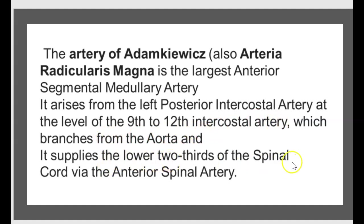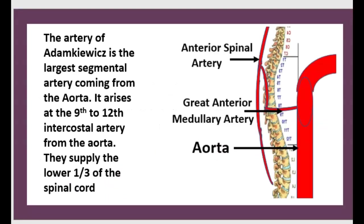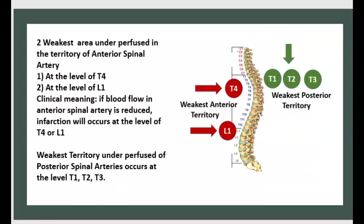The great anterior medullary artery comes from the aorta to reinforce the anterior spinal artery. There are two weakest areas of perfusion in the territory of the anterior spinal artery: the first is at the level of T4, and the second is at the level of L1.